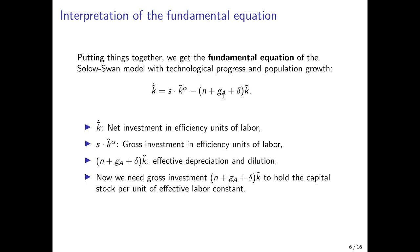With faster population growth or faster workforce growth, we need faster capital accumulation just to equip these workers with the same amount of capital — that's the capital dilution effect. By definition of capital per unit of effective labor, it also applies to faster technological progress. So on the left-hand side we have net investment in efficiency units, which is the difference between gross investment and effective depreciation plus dilution. If gross investment exceeds effective depreciation and dilution, capital per unit of effective labor accumulates; otherwise it decumulates.